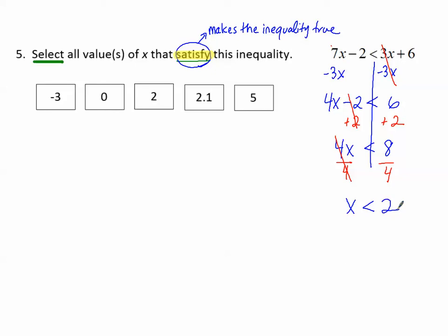So if we think about the solutions, they are any numbers less than 2. Is 5 less than 2? No, 5 is bigger. Is 2.1 less than 2? No, 2.1 is bigger. Is 2 less than 2? No, 2 is equal to 2. So that's not a solution. 0 is less than 2, so this one works. And negative 3 is less than 2, so this one works.